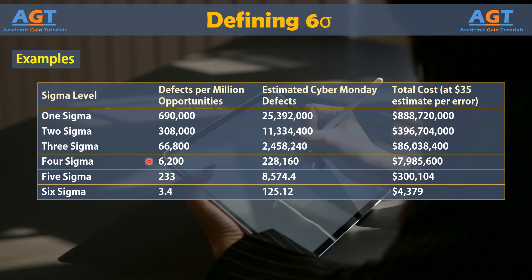We already discussed that at Five Sigma level, with an average cost of $35 per error, the total cost of errors would be $300,104. And at Six Sigma level, with an average cost of $35 per error, the total cost of errors would be just $4,379. So what we observed is that at very low levels of Sigma, any process is unlikely to be profitable. The higher the Sigma level, the better the bottom line is likely to be.